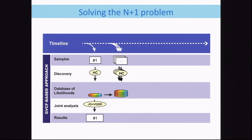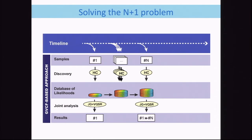The calling step is much cheaper — this joint genotyping is a much cheaper calculation that we can do many times if we want. We can add in samples, we can take out samples. As we get more samples, we can just keep adding them in and doing the calling again. The expensive initial Haplotype Caller stage is never repeated.